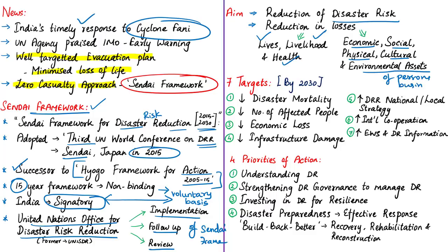The framework outlines seven clear targets and four priorities for action to prevent new disaster risks and reduce existing risks. The first global target is to substantially reduce global disaster mortality by 2030, aiming to lower the global average deaths due to disaster per 1 lakh population in the decade 2020–2030 as compared to the period 2005–2015.